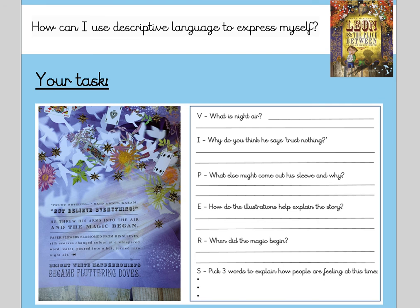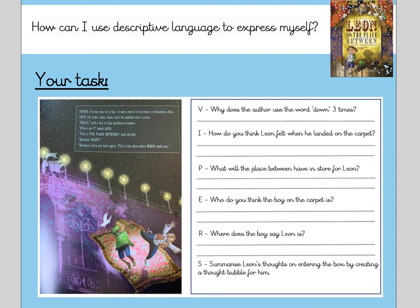There are two different tasks based on two parts of the text. For the first section you're going to answer: what is night air? Why do you think he says "trust nothing"? What else might come out of his sleeve and why? How do the illustrations help explain the story? When did the magic begin? And pick three words to explain how people are feeling. The challenge task is on the new page: why does the author use the word "down" three times? How do you think Leon felt when he landed on the carpet? What will the place between have in store for Leon? Who do you think the boy on the carpet is? Where does the boy say Leon is? And summarise Leon's thoughts on entering the box by creating a thought bubble for him.